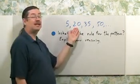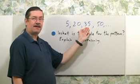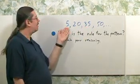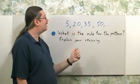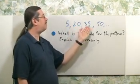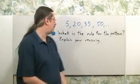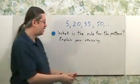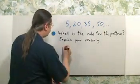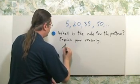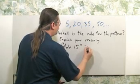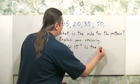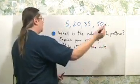Wait. 20 plus 15 is 35. That works over here too. 5 plus 15 is 20. 20 plus 15 is 35. 35 plus 15 is 50. So what is the rule? We can just state add 15 is the rule.